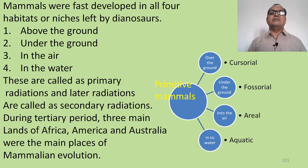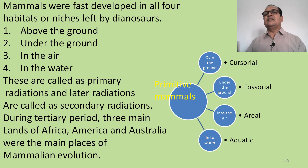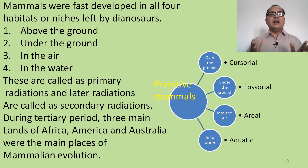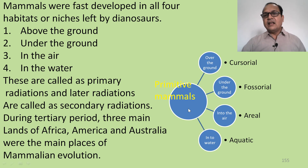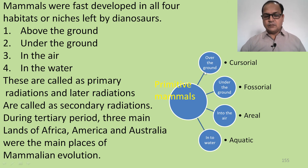Mammals vastly developed in all four habitats or niches left by the dinosaurs: above the ground, under the ground, in the air, and in the water. From this primitive ancestral mammal at the center, four lines radiated — over the ground, under the ground, into the air, and into the water.